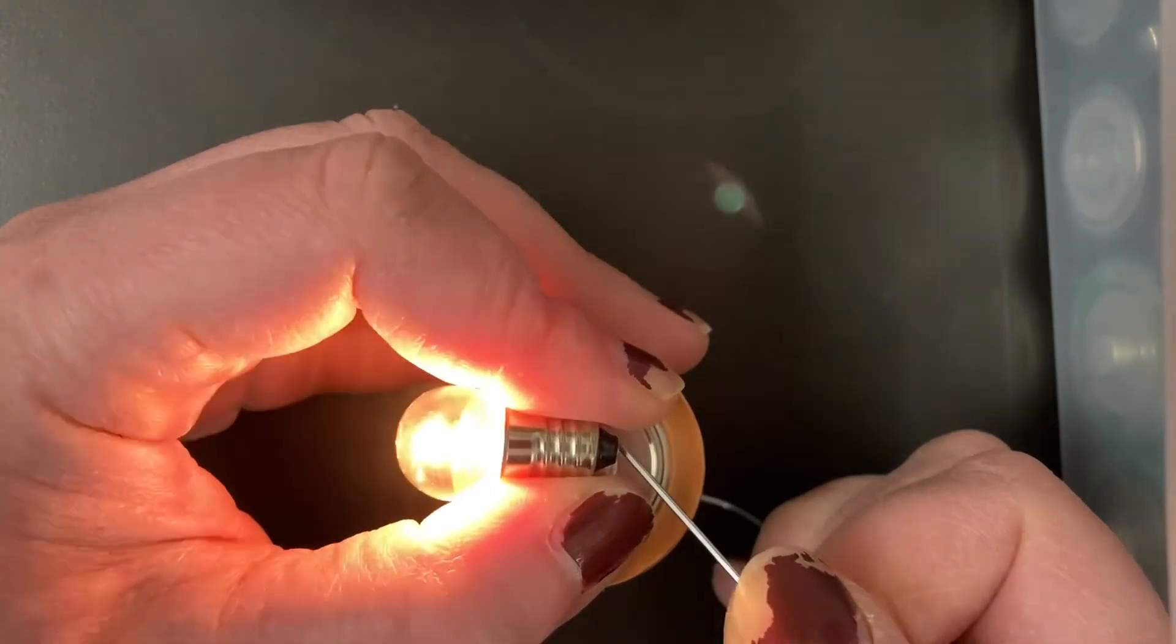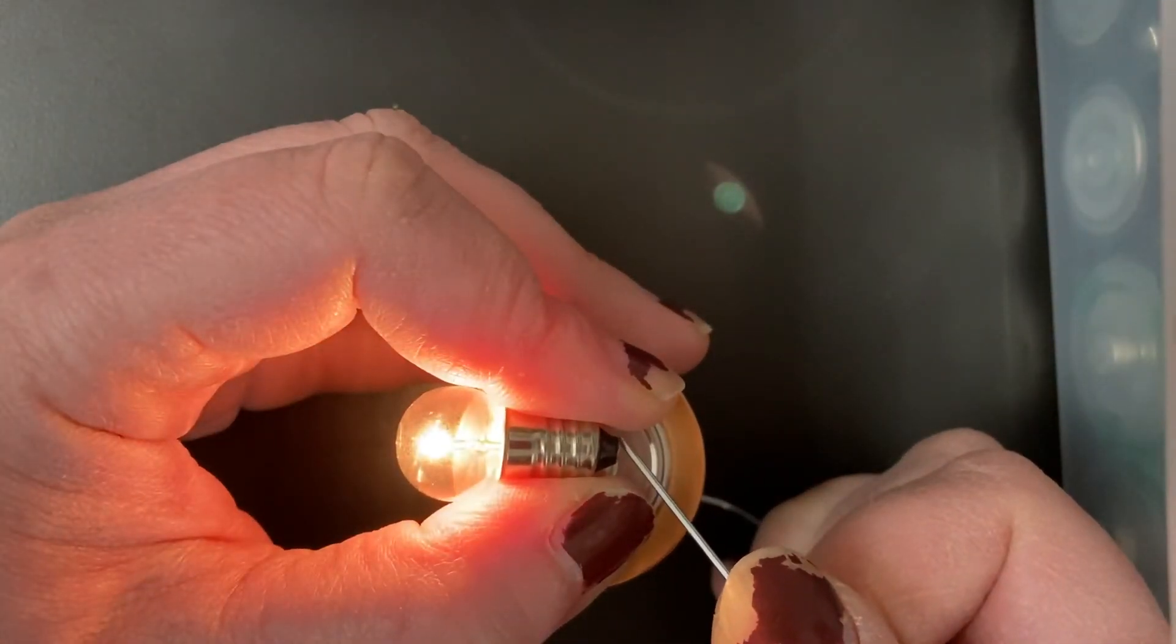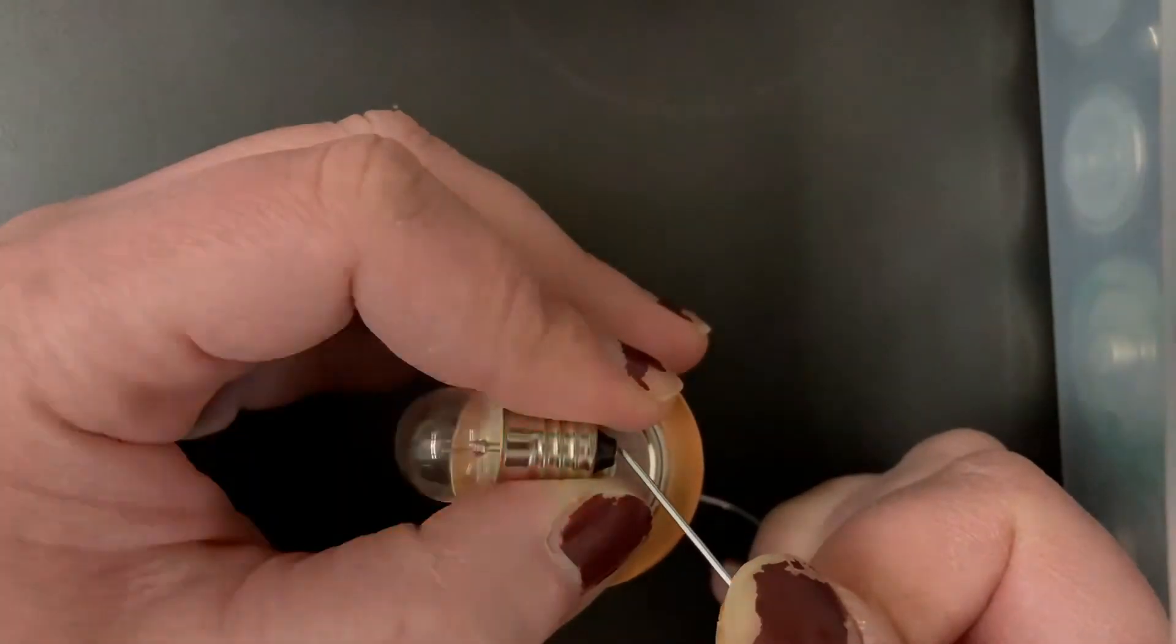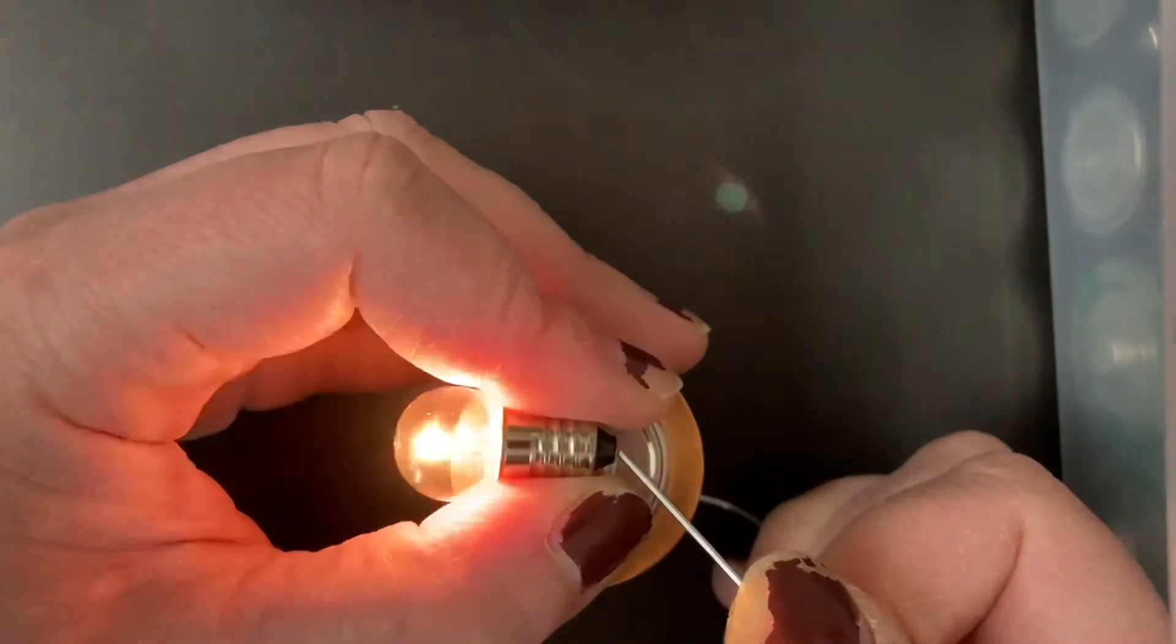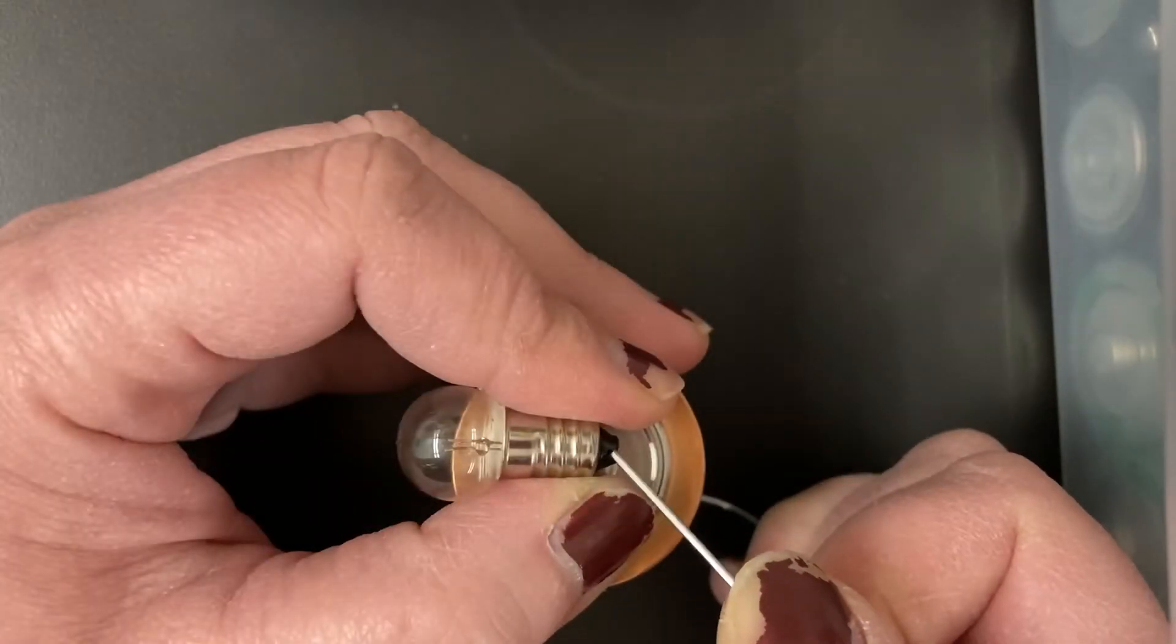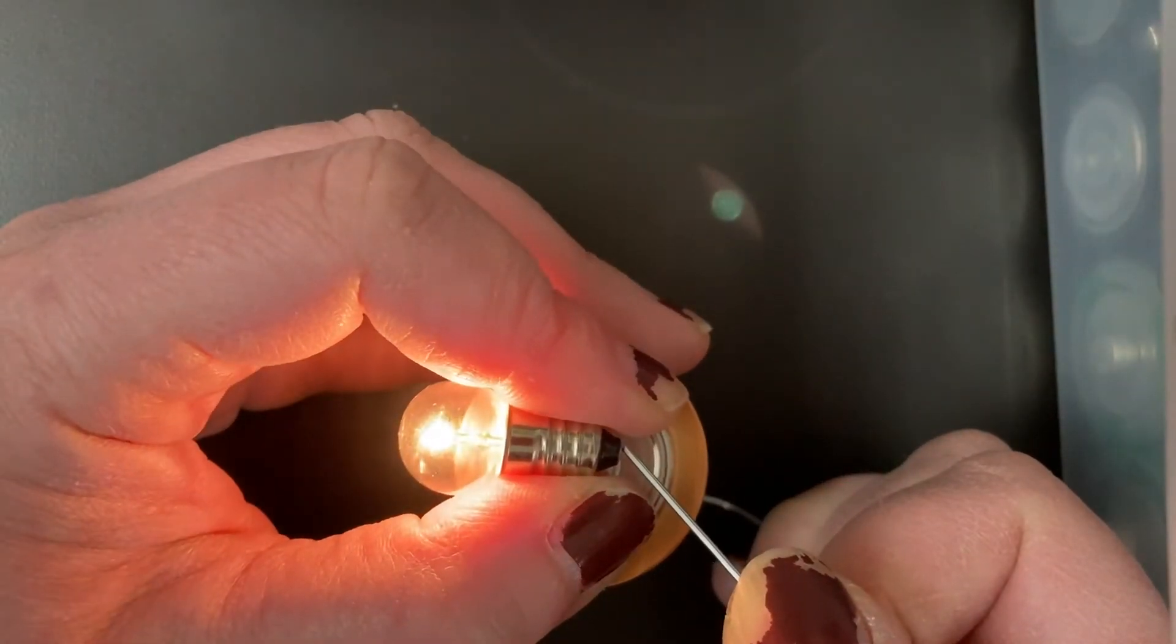The paper clip is a metal paper clip and it's known as a conductor so it can easily transfer electrons from one to another. Sorry. There we go. Hopefully it stays in place.